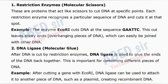1. Restriction Enzymes – Molecular Scissors. These are proteins that act like scissors to cut DNA at specific points. Each restriction enzyme recognizes a particular sequence of DNA and cuts it at that spot. For example, the enzyme EcoRI cuts DNA at a specific sequence. This cut leaves sticky ends – overhanging pieces of DNA – which can easily be joined with other DNA.